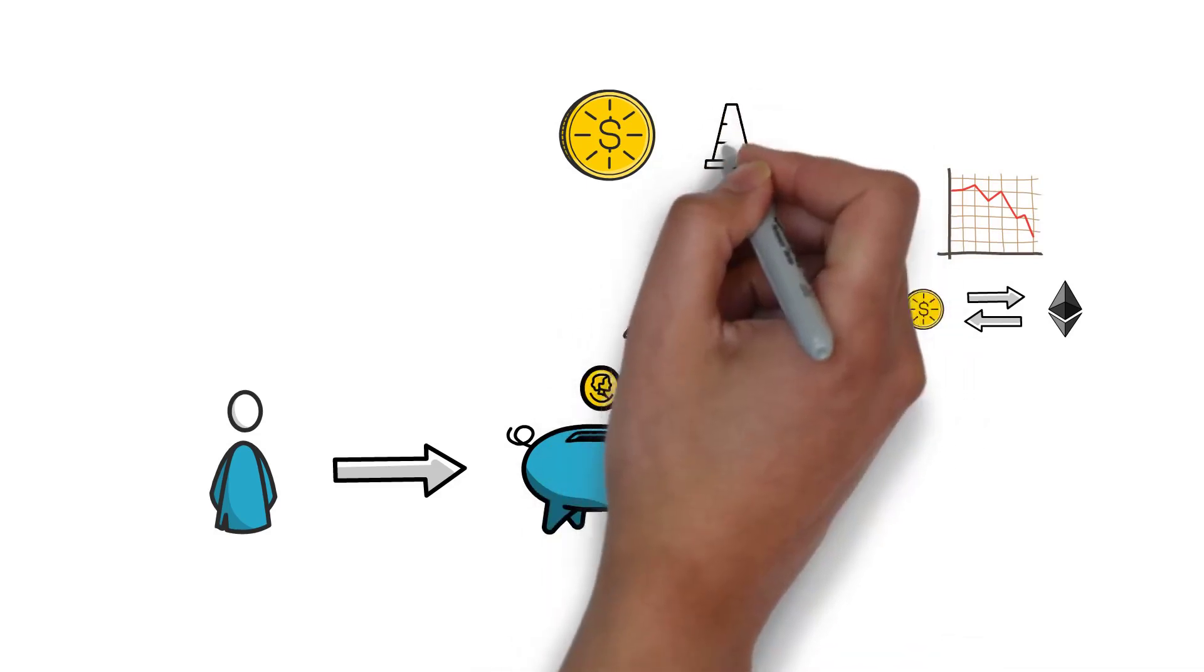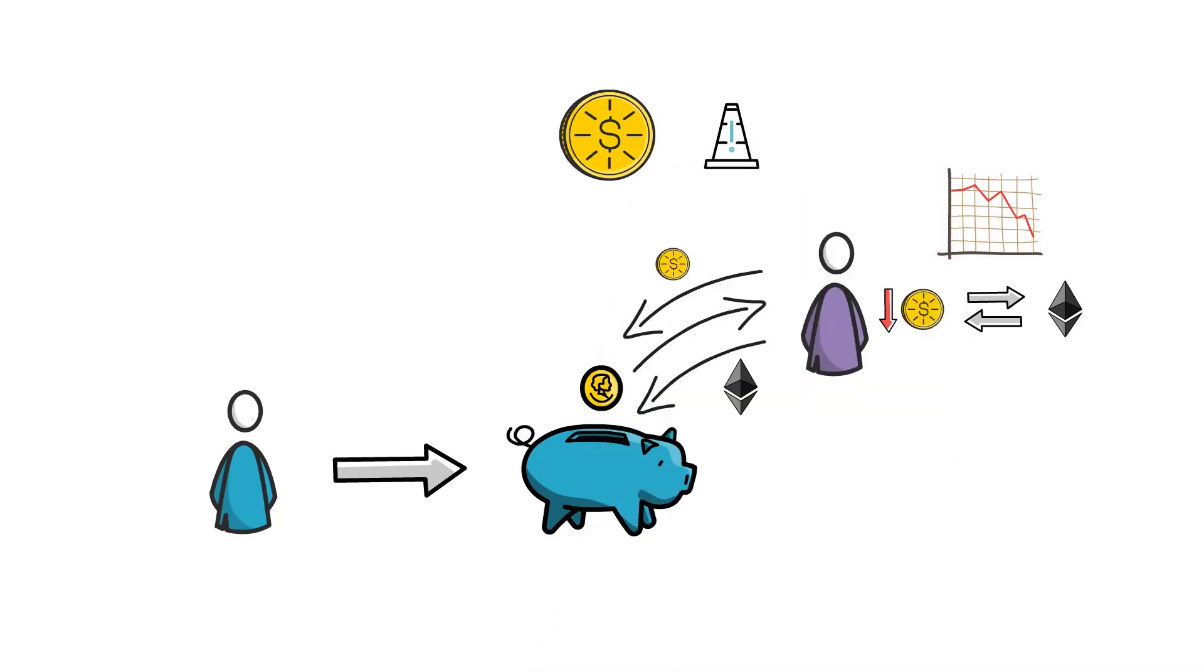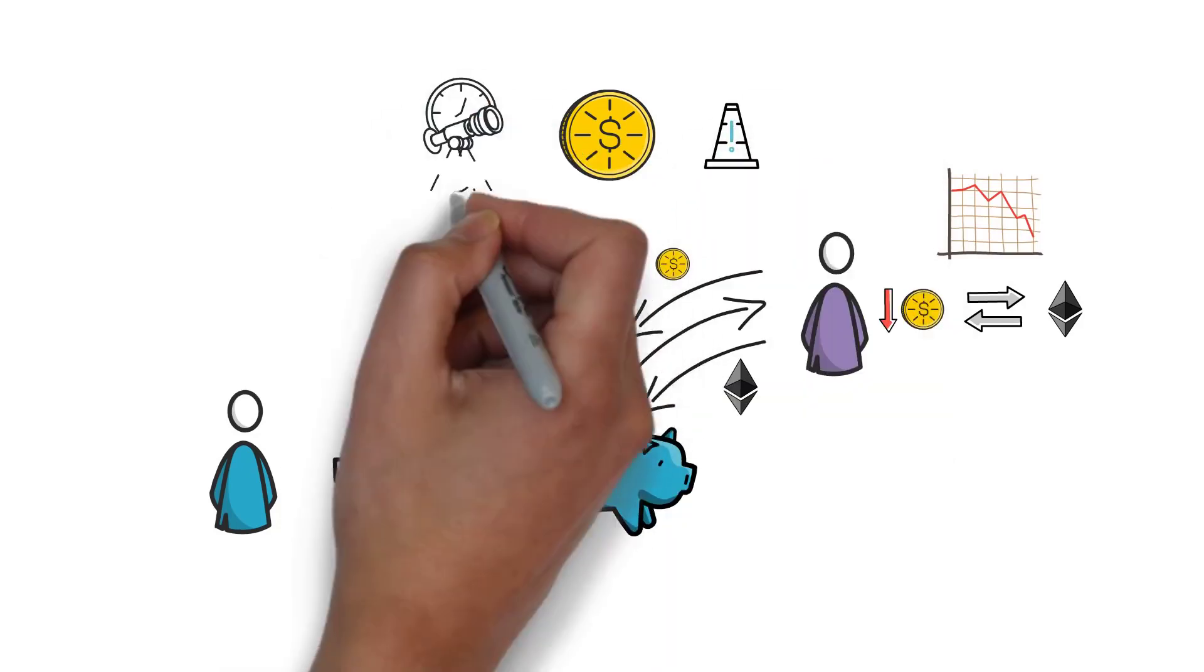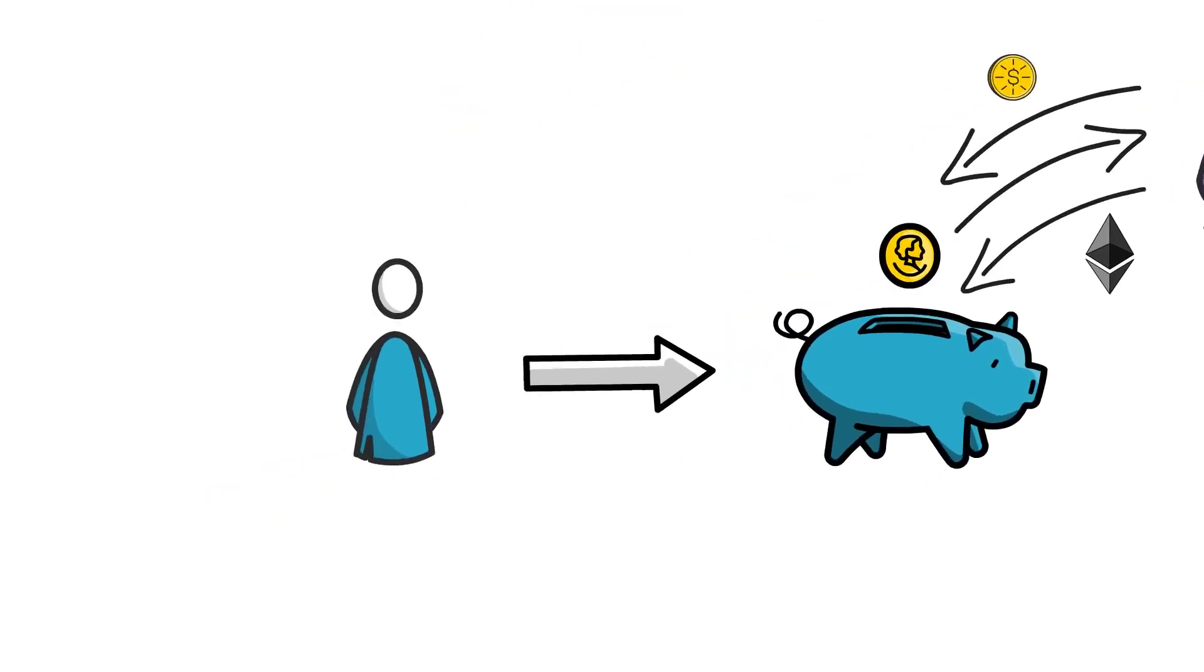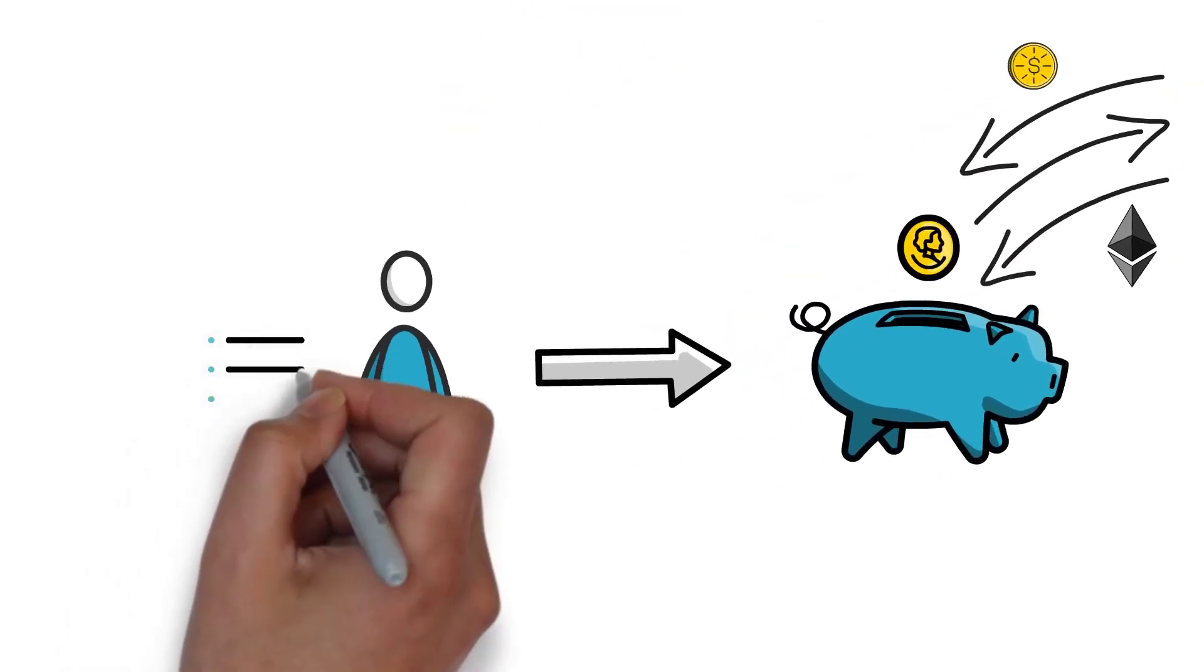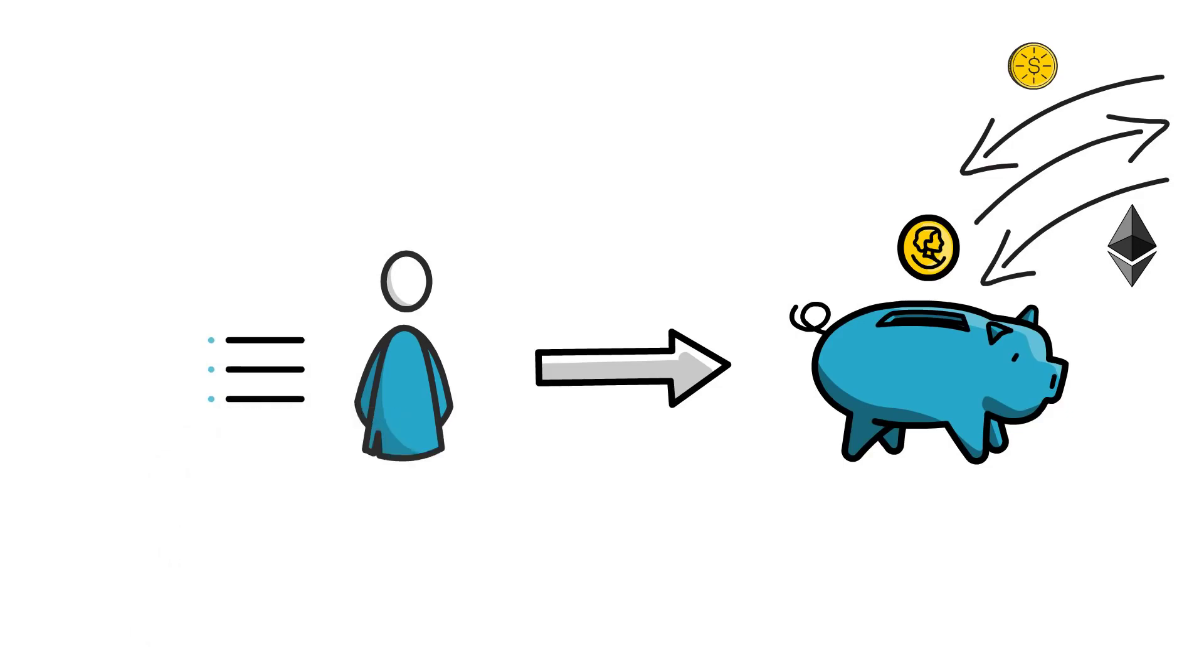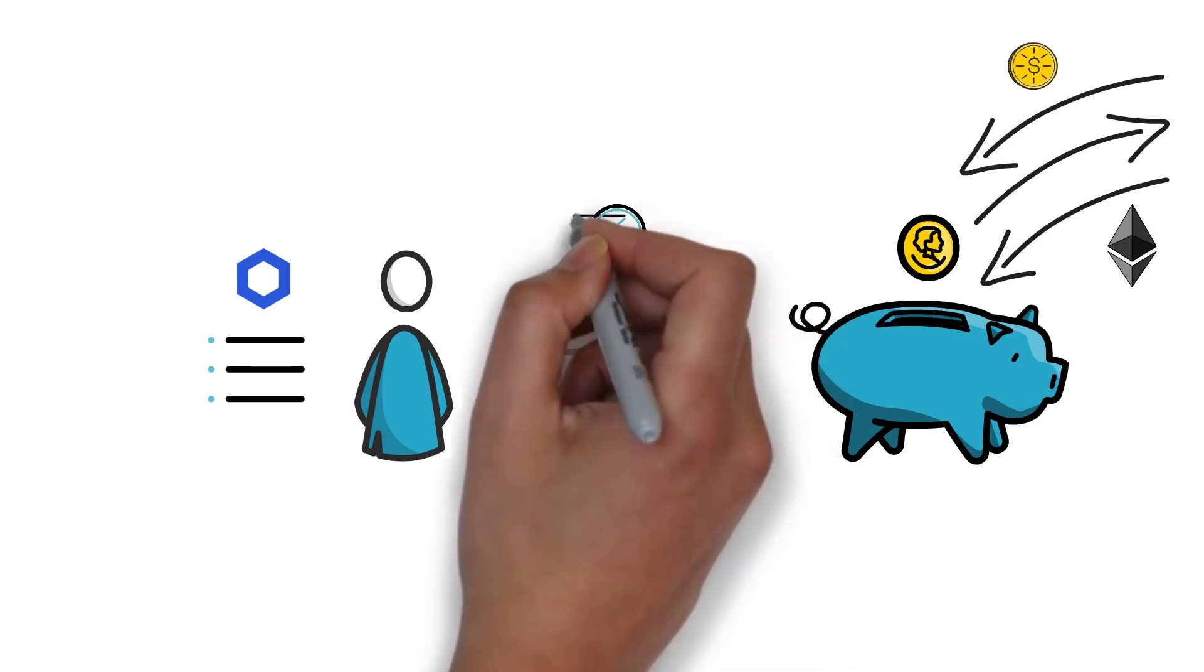The main caveat is that in order to create a money market for a new token, there has to be a reliable price oracle available. Kashi allows the user to choose a price oracle at the time of creating a new market. At the moment, only price feeds available on Chainlink can be used, limiting the number of possible new markets that can be created.